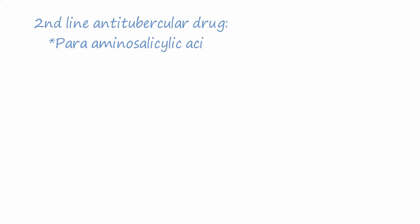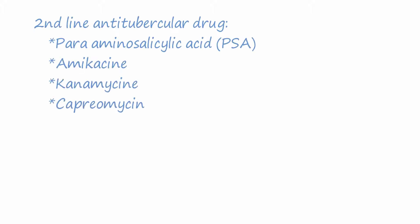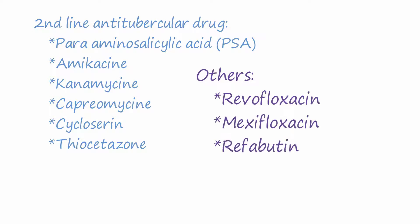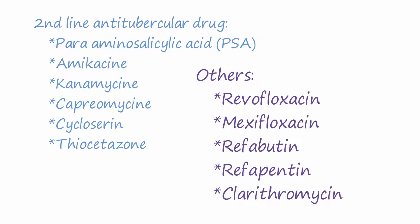Second-line anti-tubercular drugs include para-aminosalicylic acid, amikacin, kanamycin, capreomycin, cycloserine, and thioacetazone. Other drugs include ciprofloxacin.